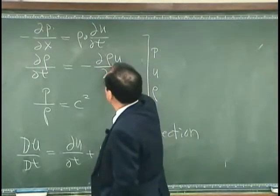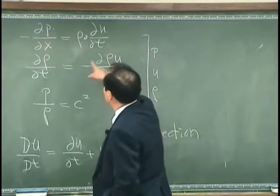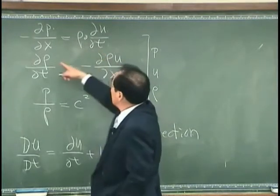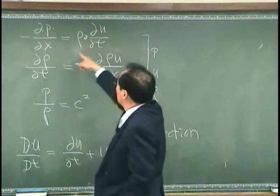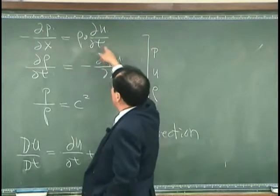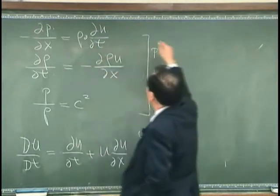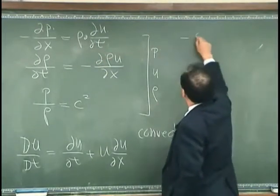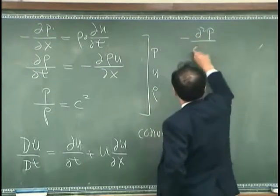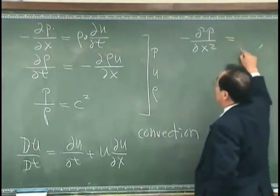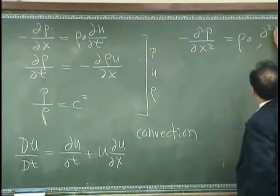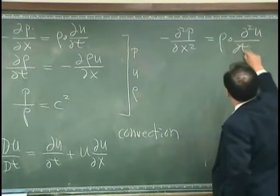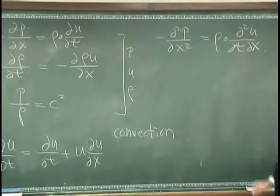Now, to eliminate ρ and u, what I can do is I differentiate this with respect to x. Then I will have d²p/dx² = ρ₀ d²u/dt dx.